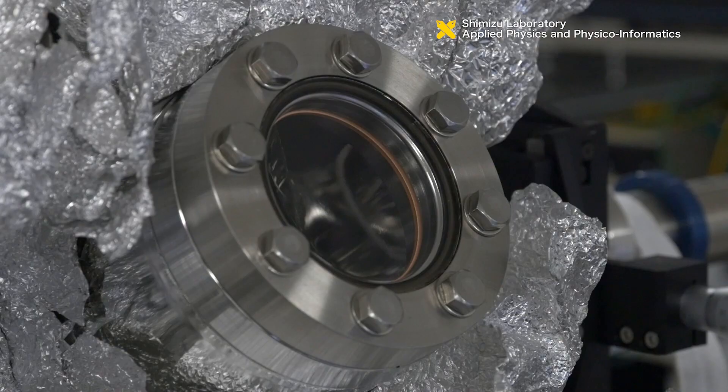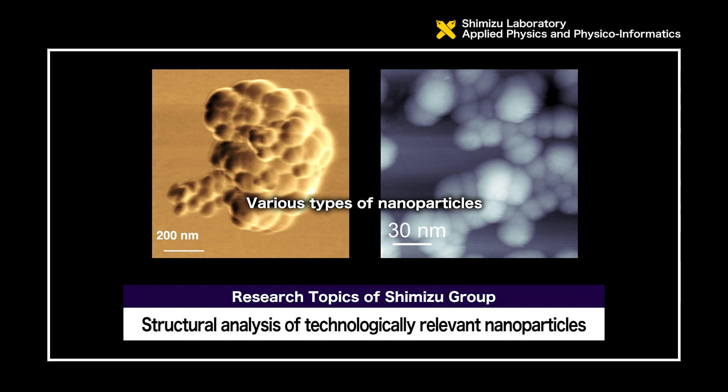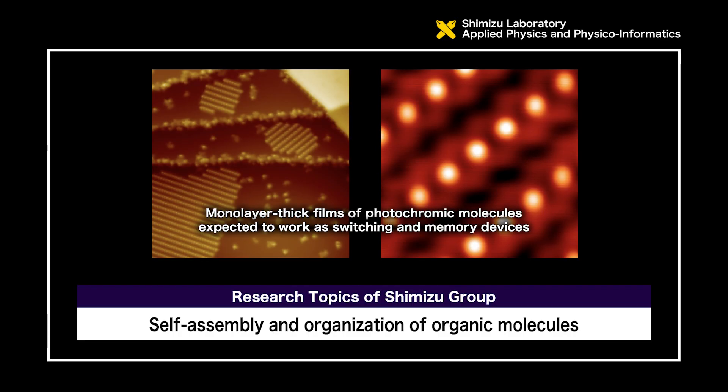Shimizu group uses this microscope to study gas adsorption behavior on oxide surfaces to gain better understanding of catalytic reaction mechanisms. Shimizu group is also interested in other types of materials. Not only materials that exist in nature, but they also observe materials that are synthesized and artificially created. For example, they characterize structures of individual nanoparticles and their aggregation.